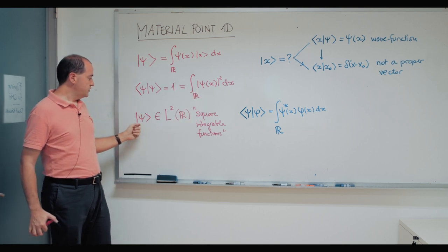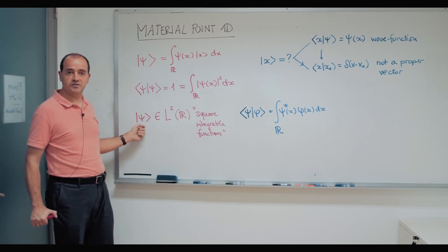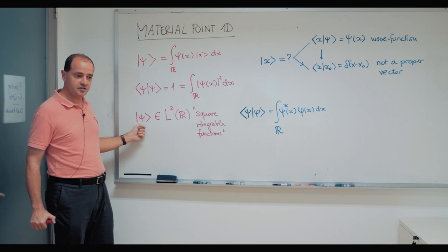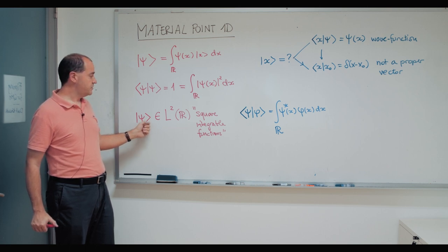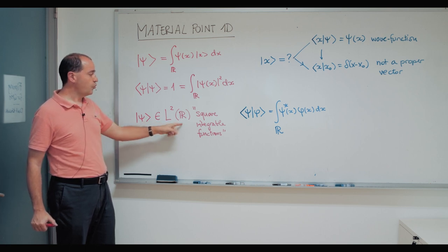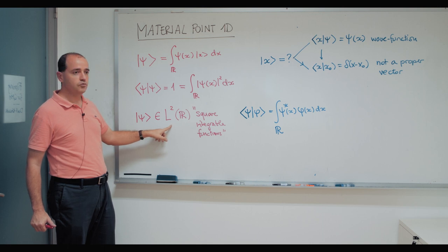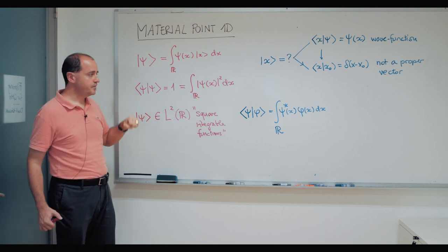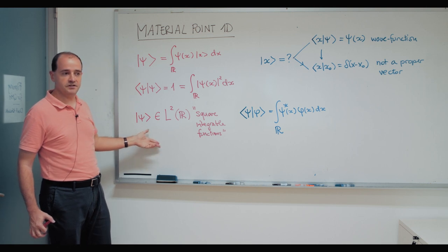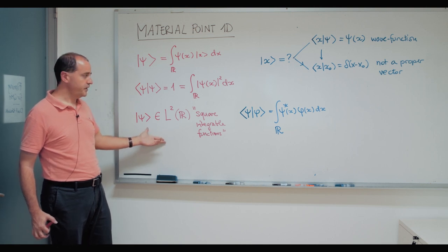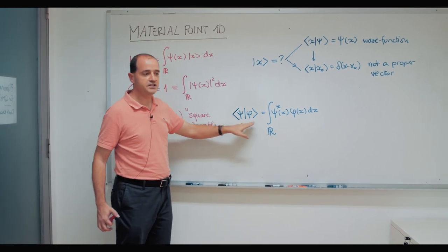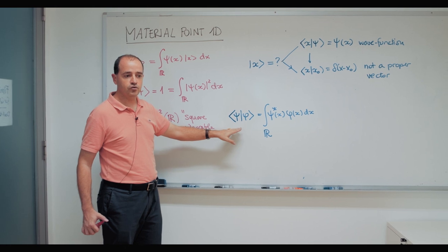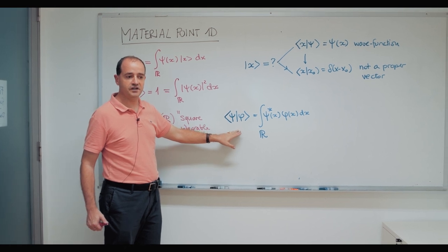So the Hilbert space — the vector space we're going to use to describe the system — is the space of square integrable functions, which means functions such that their integral is not infinity. There is a scalar product on this vector space that is defined accordingly. It's very similar to what we had for discrete variables.